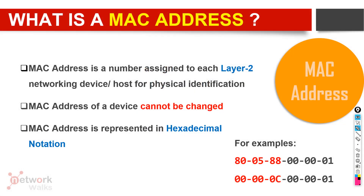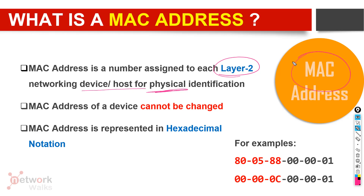A MAC address is a physical address — a number assigned to each layer 2 networking device or host for physical identification, in contrast to an IP address which is used for logical addressing. A MAC address is used for physical identification of a device, usually on a local area network.